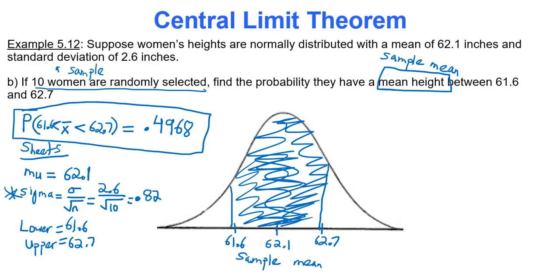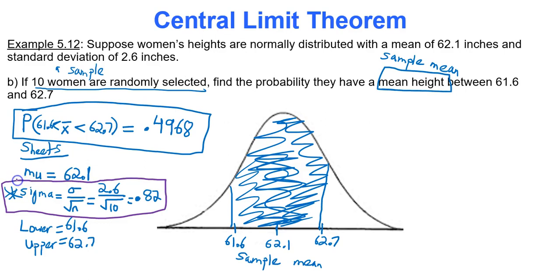Once again, central limit theorem — we had to adjust sigma by dividing by the square root of the sample size, the square root of 10 in this case. A really powerful result. We're going to be doing more with the central limit theorem as we progress further into the course. For now, thanks for watching — I hope you enjoyed!